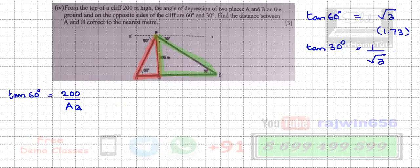Now by calculations I am going to find how much is AQ. So tan 60 is root 3 as I have written the value.